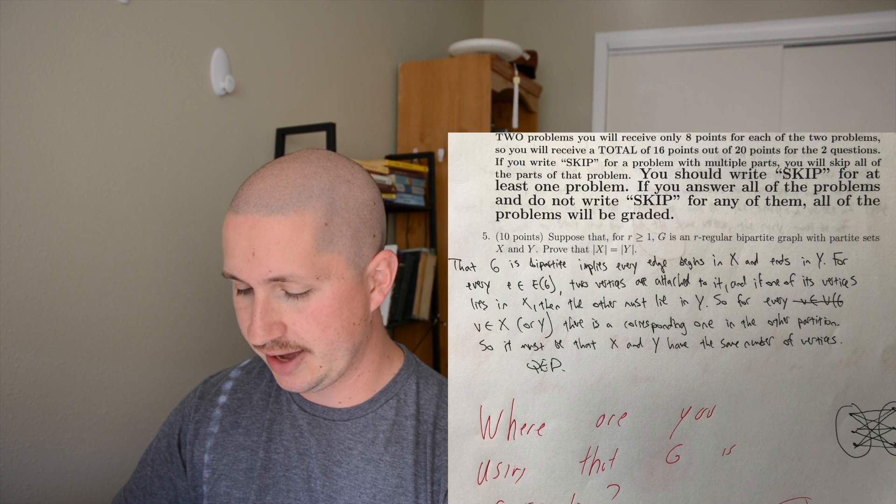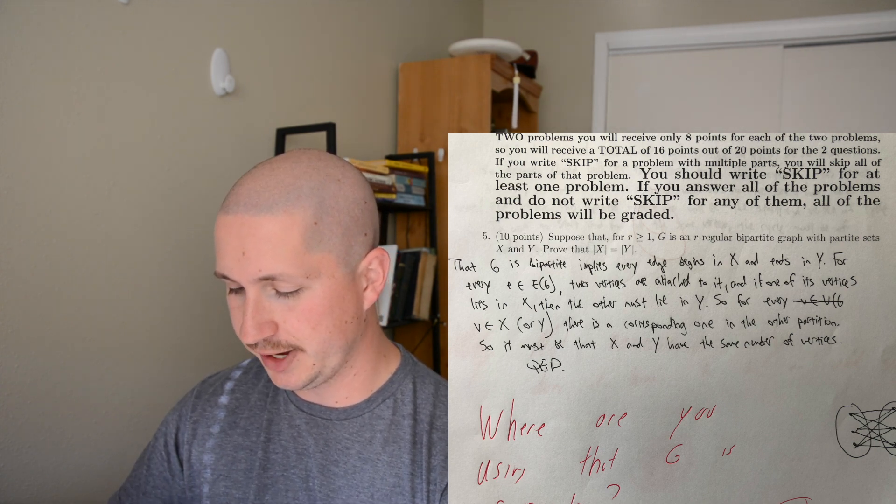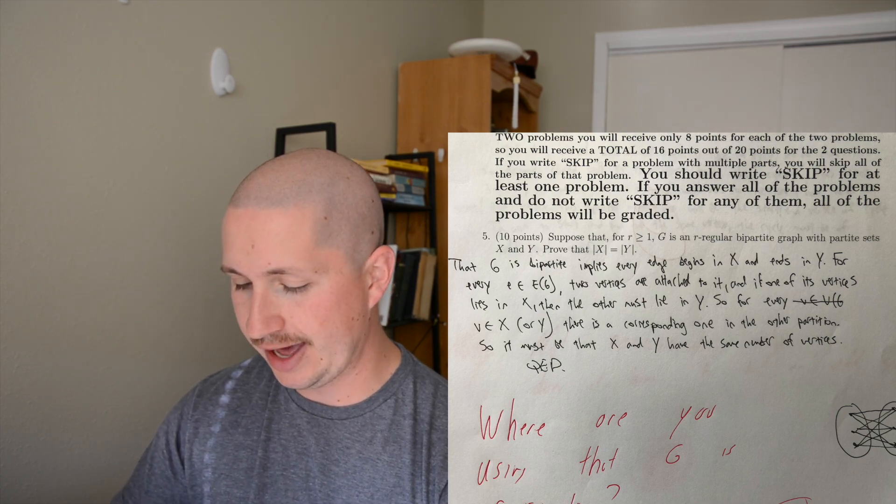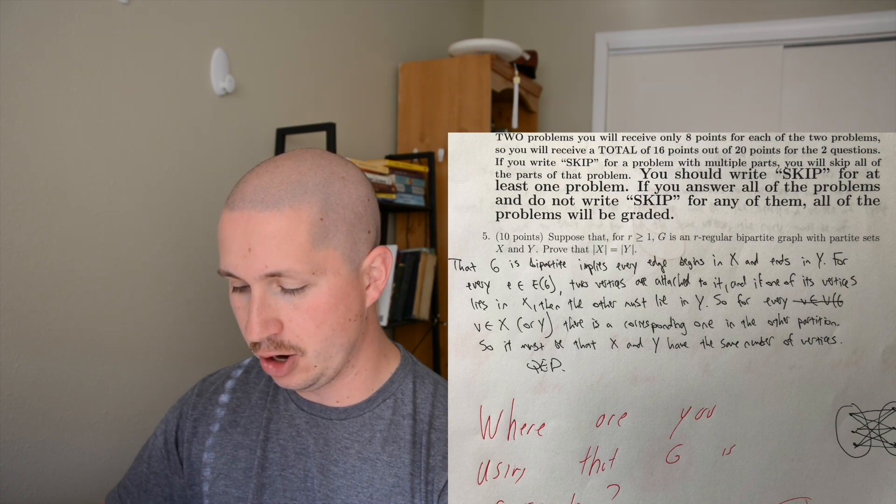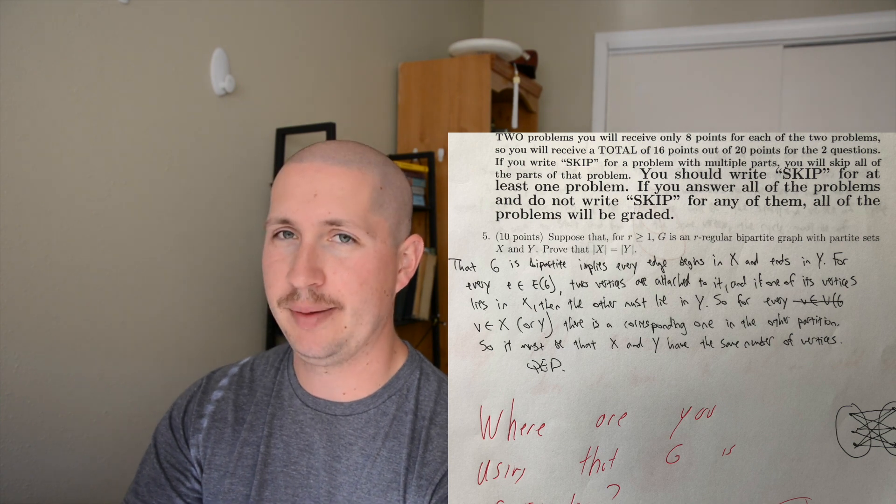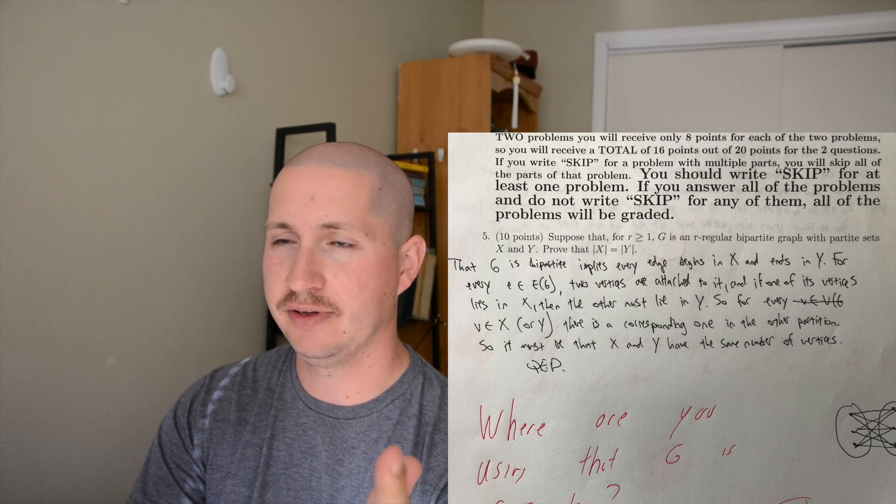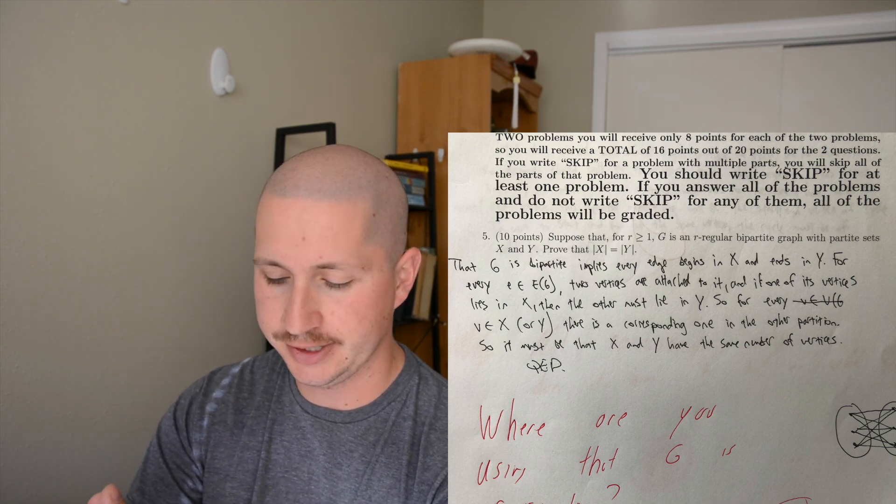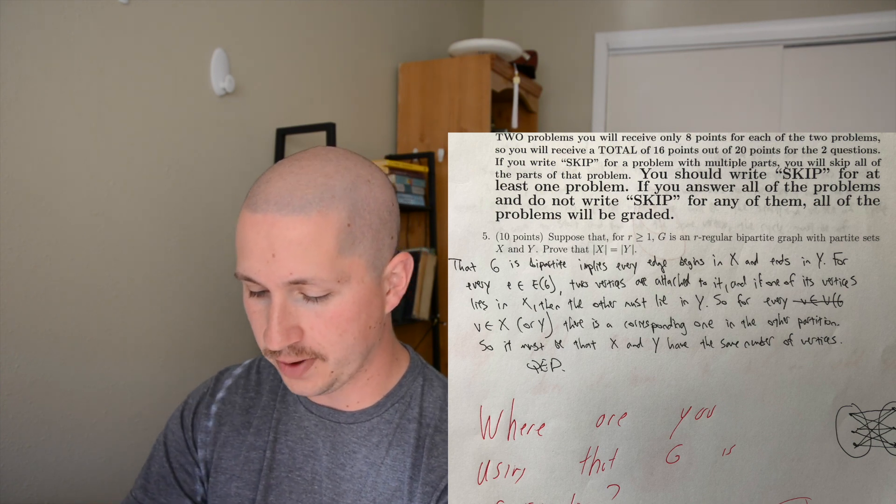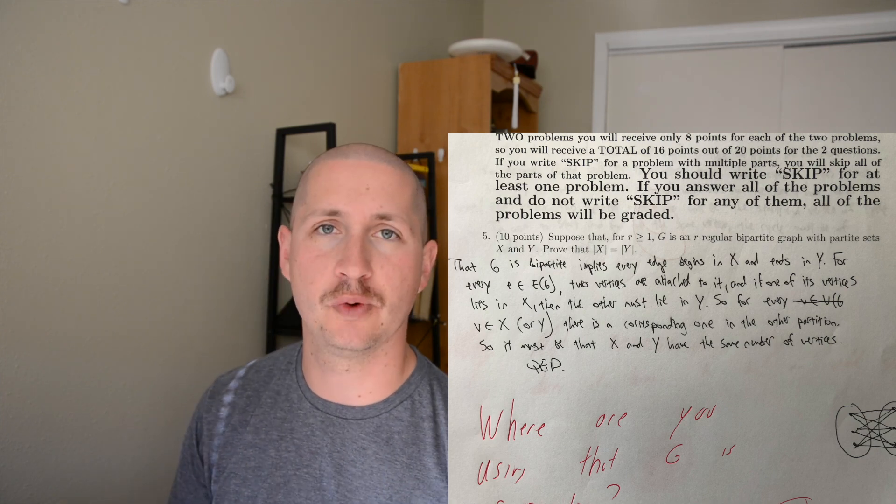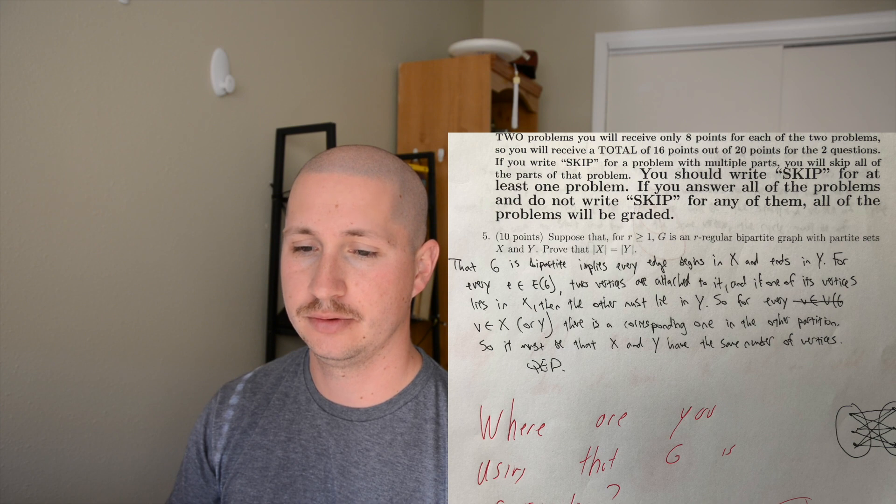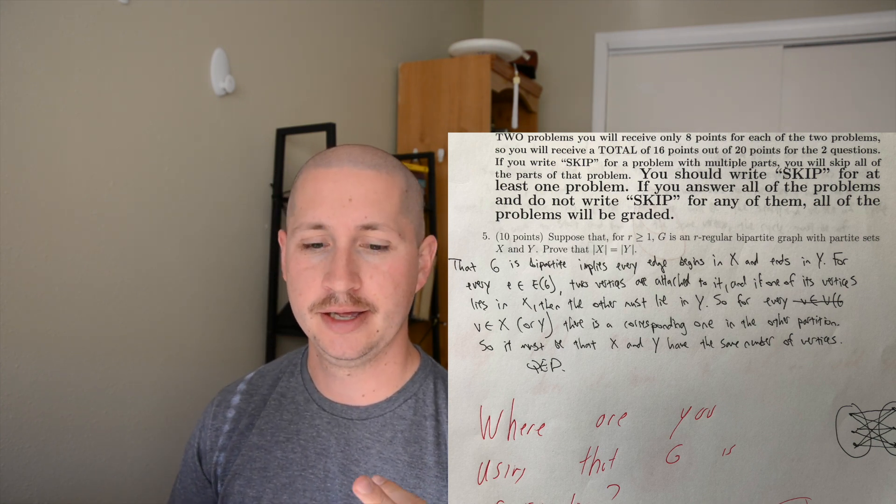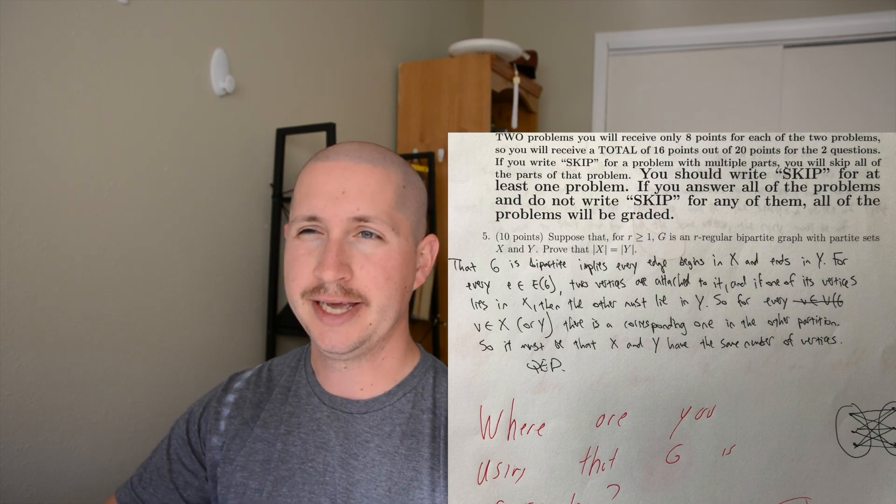The next one is where we get to proofs. Suppose that for radius greater than or equal to one, G is a regular bipartite graph with partite sets X and Y. Prove that the size of those partites are the same. There's a lot of vocabulary in here. Knowing what r-regular is and knowing what bipartite is - bipartite is probably the most important part. Bipartite means if a graph is cut into two parts, every vertex starts in one part or one group and ends in the other. What I usually like to do when I'm writing proofs is if I see a keyword like partite graph or r-regular or cardinality, I will write the definition of those things before I do anything else.